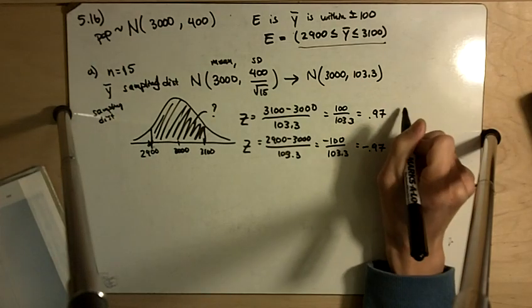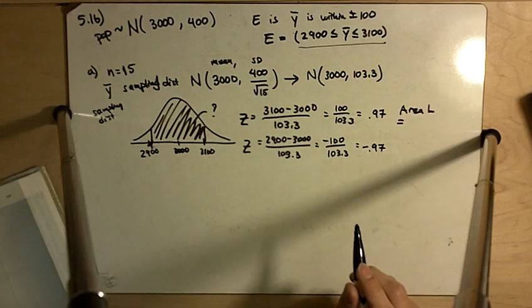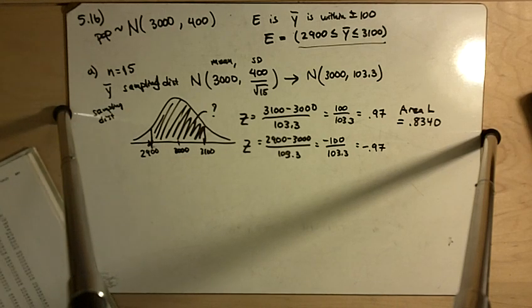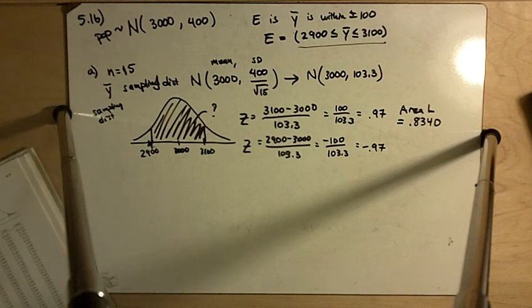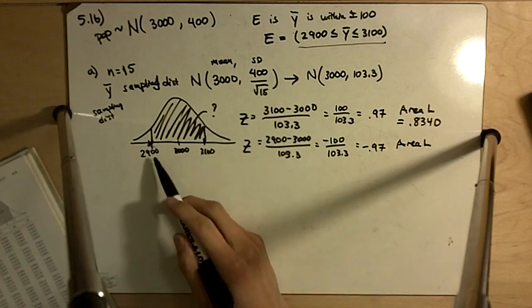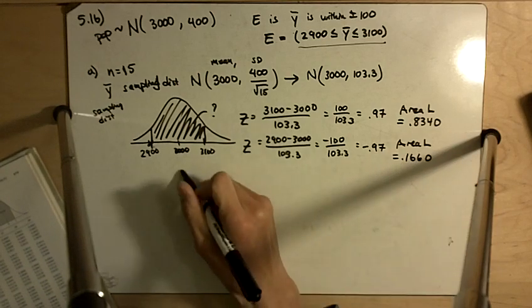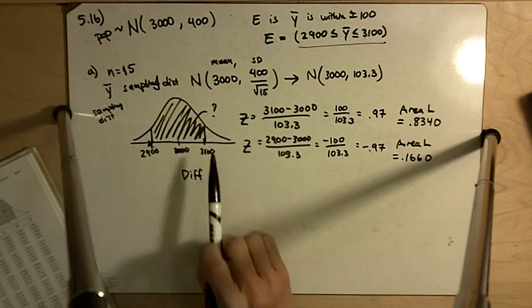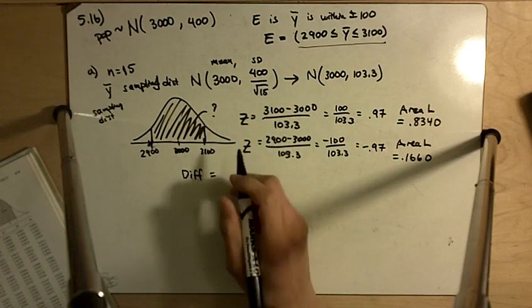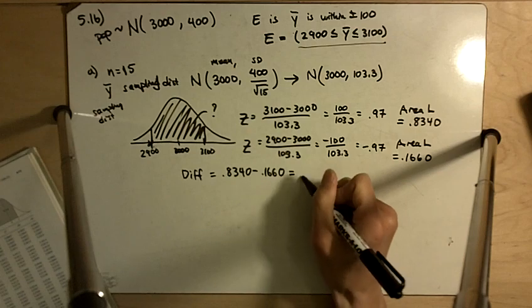The area to the left of 0.97 is equal to 0.8340, and then the area to the left of negative 0.97 is 0.1660. So remember we're taking the area to the left of here, which is 0.834, and then we're subtracting off the area to the left over here to get what's left in between. So if we take the difference, we are left with 0.6680.